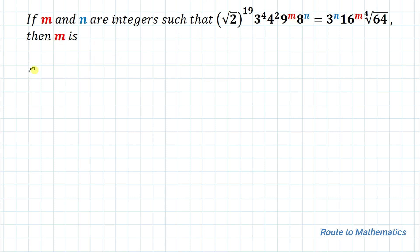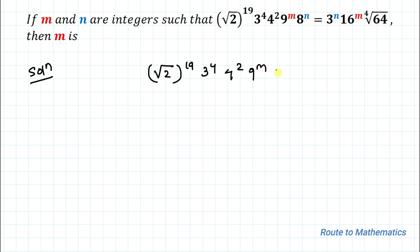So we are asked to find the value of the unknown variable m. Without any delay, let's start the solution. We are given √2 to the power 19, multiplied with 3 to the power 4, multiplied with 4 squared, 9 to the power m, 8 to the power n, equals 3 to the power n, 16 to the power m, times the 4th root of 64.